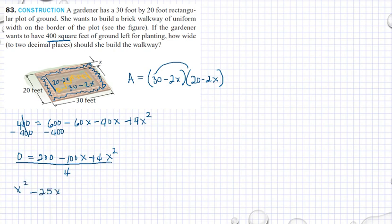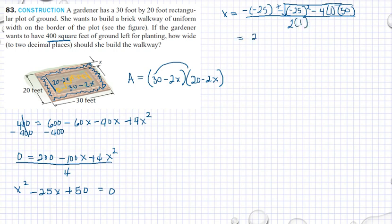We're going to solve x by the quadratic formula. Then we have x equals negative b, which is negative 25, plus or minus the square root of negative 25 squared minus 4 times a which is 1 and c which is 50, divided by 2 times 1.